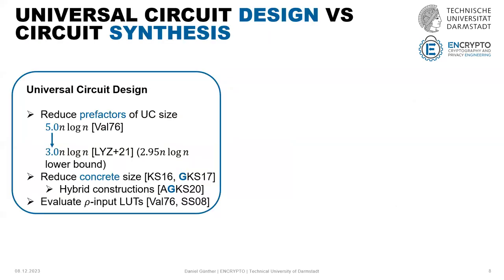In the literature, universal circuits have mainly been about reducing the size, and we have some pre-factors for universal circuit size. When the students first worked on this, we had a value of 5.0 n log n, and over many years this was improved to 3.0 n log n. Another line of work was more focused on reducing concrete size with small optimizations, but those don't influence this asymptotic factor.